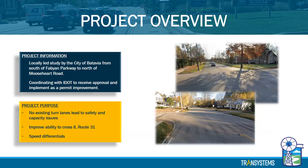We're also coordinating with IDOT since this is an IDOT route. They have jurisdiction over the road, so they have to review and approve anything that we do along this corridor. The project purpose: there are no existing turn lanes, which lead to some safety and capacity issues along the corridor. We're also looking to improve the ability to cross Illinois Route 31 — it's easier to cross a three-lane intersection than a four-lane intersection. It's also going to reduce speed differentials. People drive various speeds on this corridor; you might have someone going 35 and someone going 50 miles an hour next to them, which causes challenges.